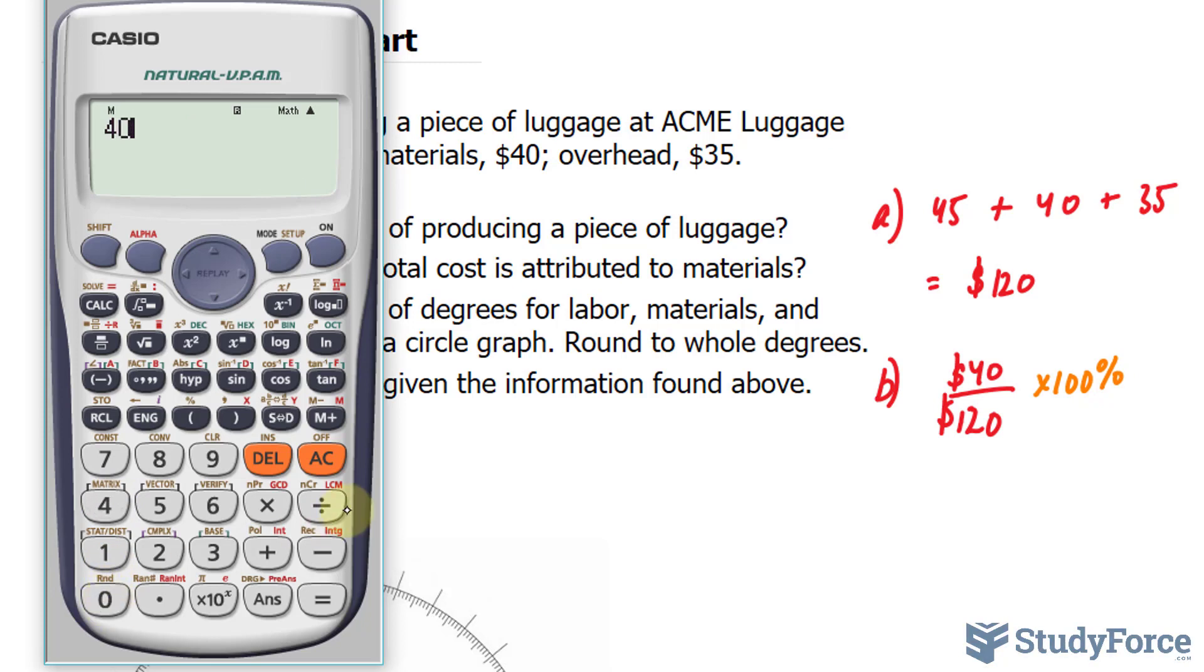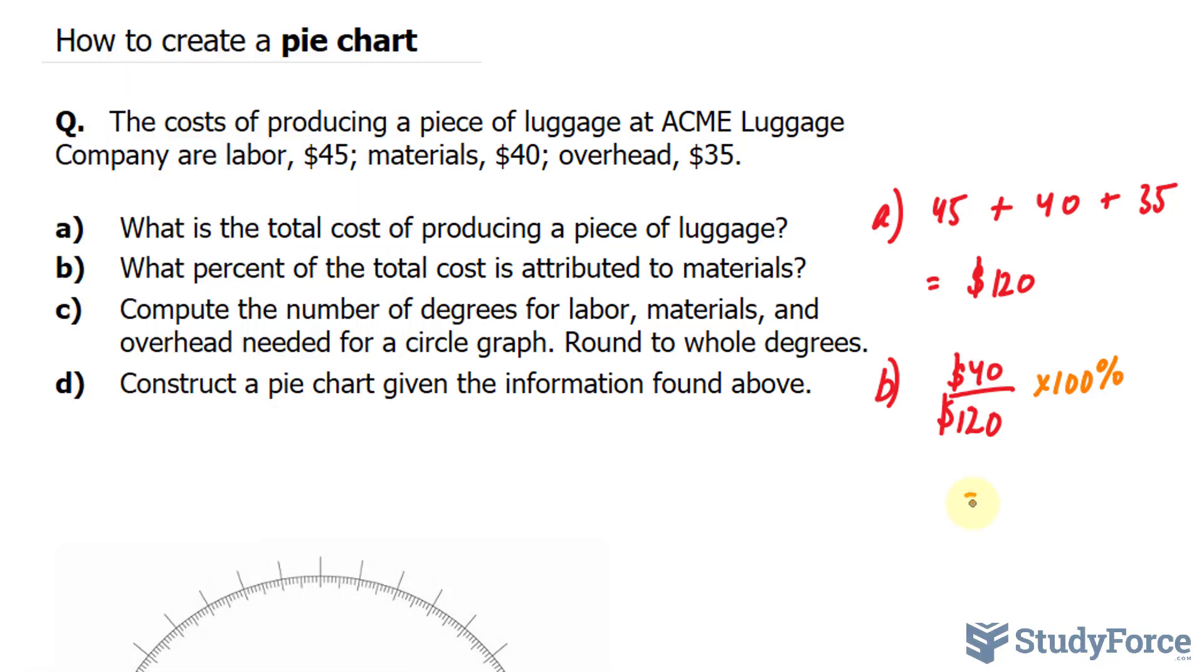So using our calculator, 40 divided by 120, that gives us a third, and I'll multiply this now by 100. And your calculator should give you 33.3 repeating. The two numbers after the decimal place is 33.33. And if you want to be exact, you can write down 33 and a third percent.